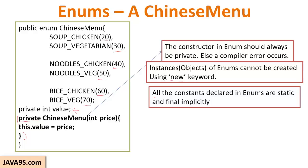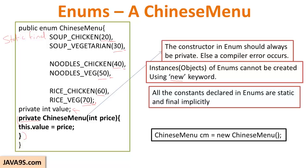All constants declared in enums are static and final implicitly. You should observe that a comma is used to differentiate between constants, and after the final constant a semicolon is used. Remember all the constants are marked as static and final implicitly — that is one single statement up to the semicolon. We will see how enum objects are created, as this new keyword statement cannot be used to create enum objects.